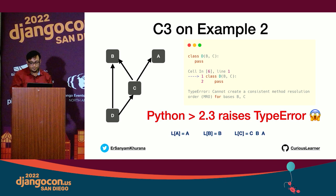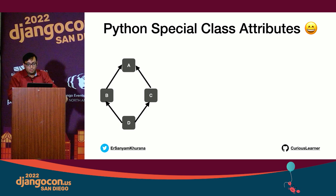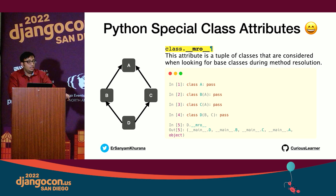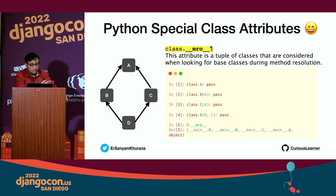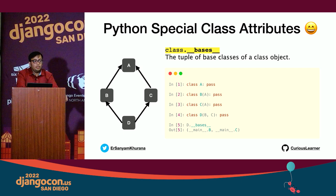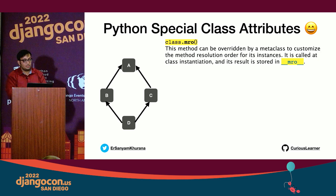Now that we understand C3, let's look at special class attributes Python provides. The __mro__ attribute is a tuple of classes considered when looking for base classes during method resolution. Doing D.__mro__ on the diamond example gives you the MRO. There's also __bases__, which lists all the direct base classes a class inherits from — D.__bases__ gives (B, C). There's also the mro() method, which returns the same result stored in __mro__, but can be overridden by a metaclass to customize the MRO for its instances.